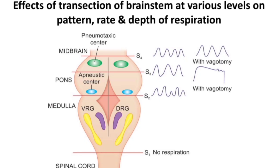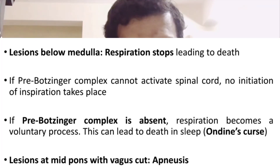Second, a lesion at the ponto-medullary junction allows inspiration to be initiated from the medulla, but without regularization, resulting in irregular respiration. Third, a lesion at mid-pons with vagus nerve cut means the pneumotaxic center cannot inhibit the apneustic center and vagal afferents are absent, resulting in prolonged inspiration called apneusis or apneustic spasm.